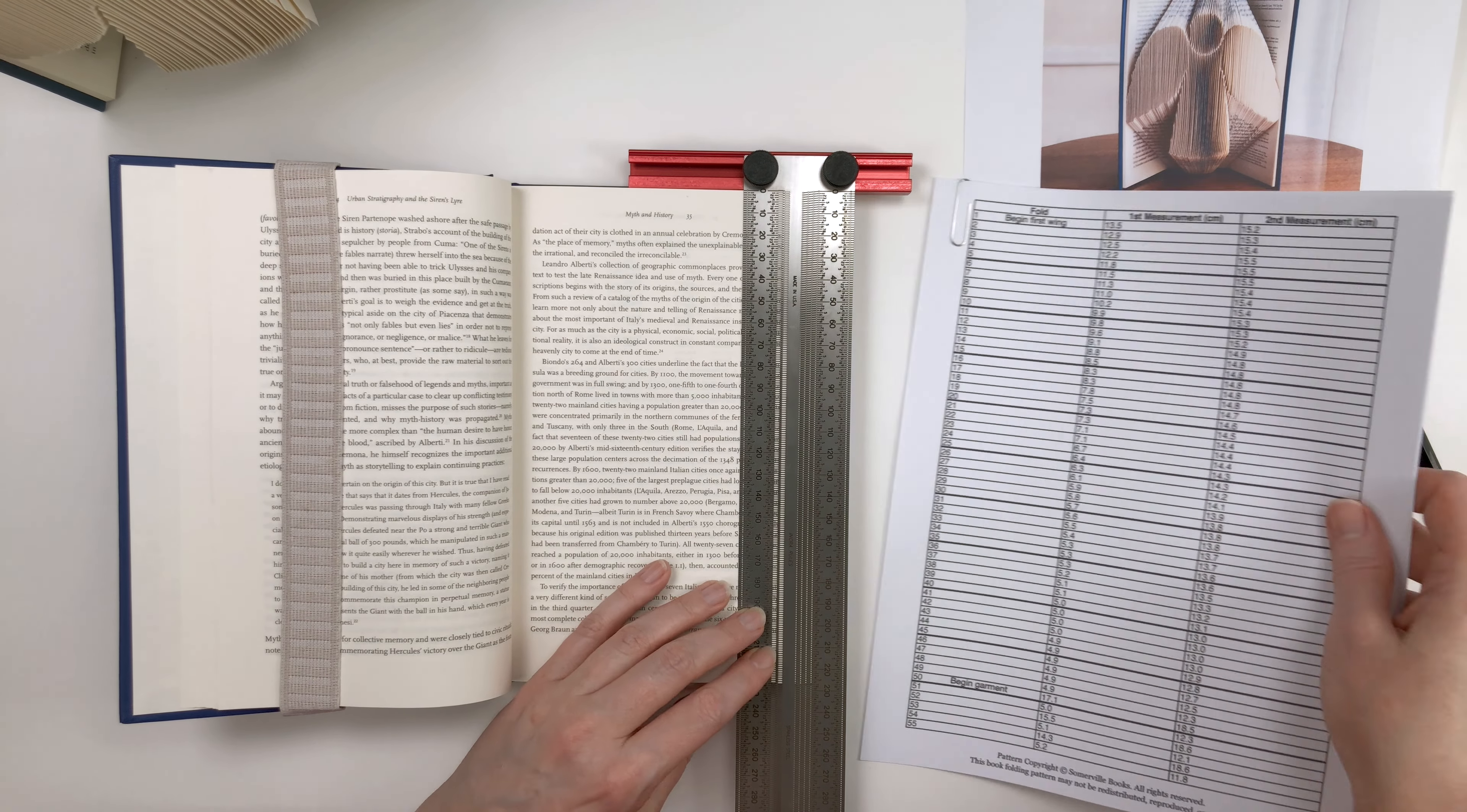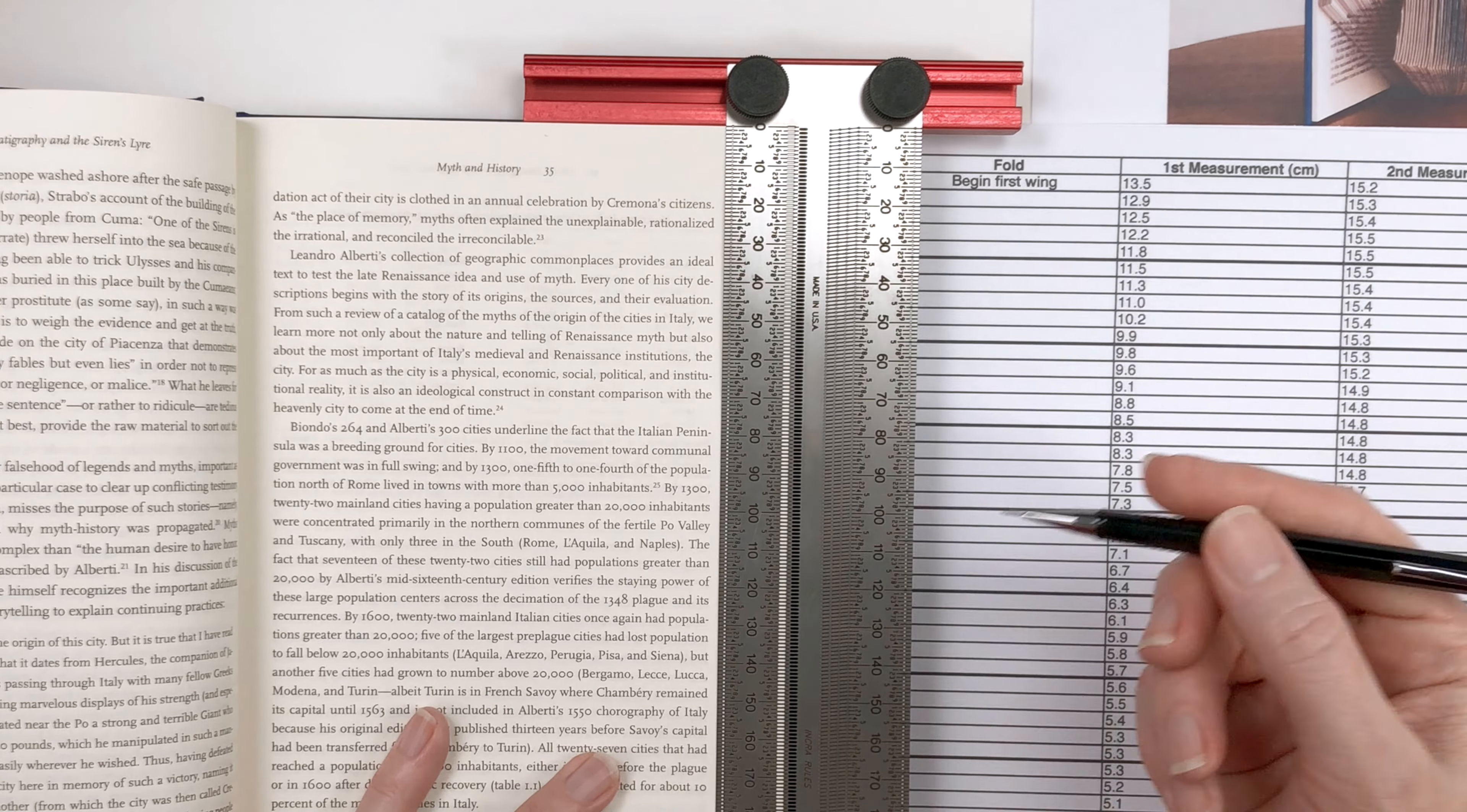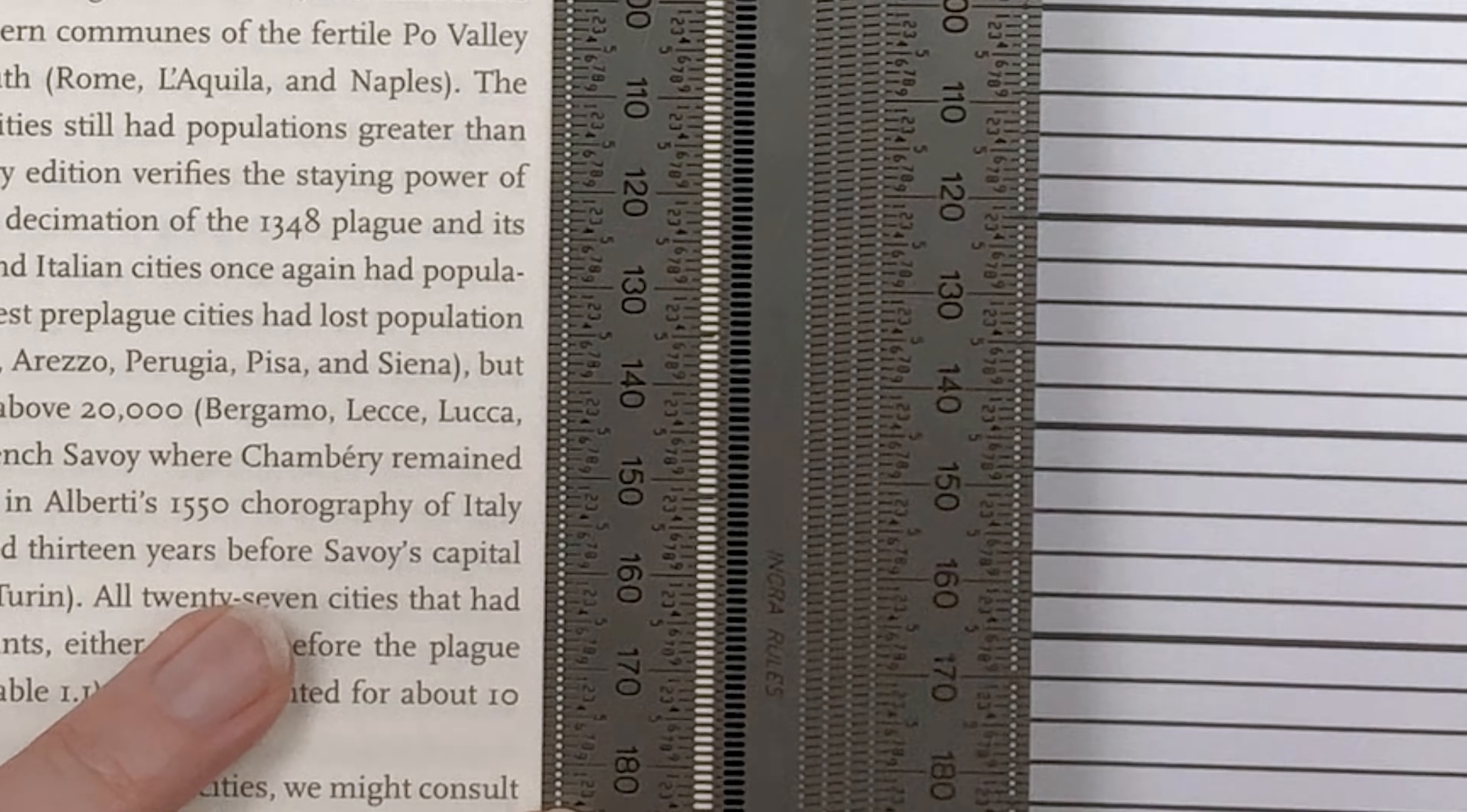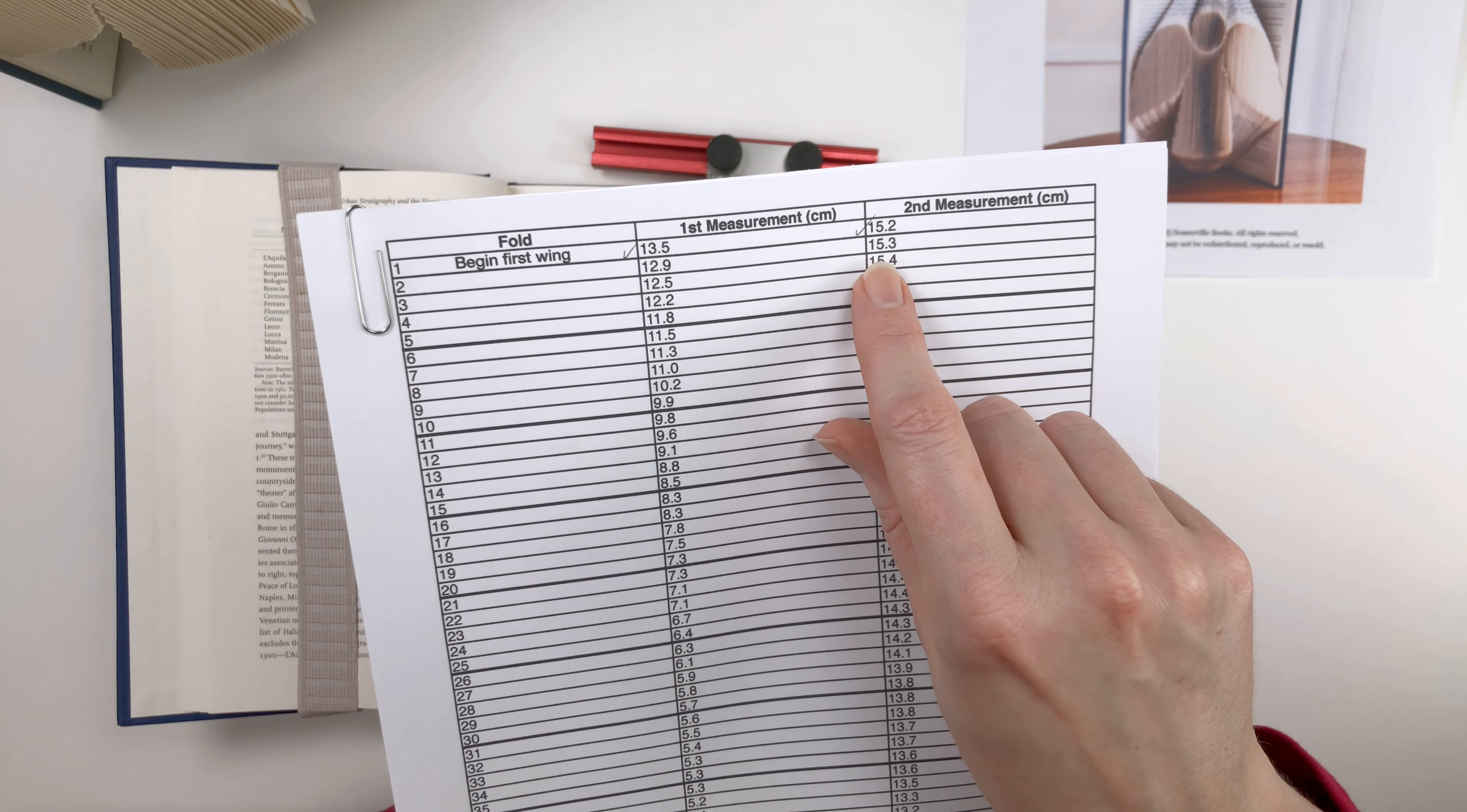For fold number one, we've got a first measurement of 13.5 and a second measurement of 15.2 centimeters. So let's mark those. And this ruler has slots in it, so my pencil just drops down right into the slot. I can see the paper right through those. So we'll mark 13.5 and 15.2. And I like to check those off as I work. Tuck that under. And for fold number two, measurements of 12.9 and 15.3.